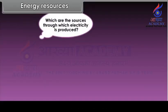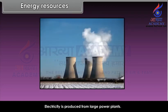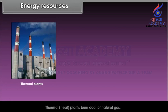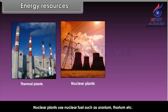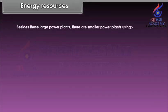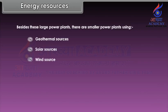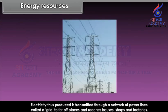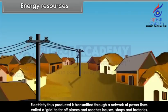Electricity is produced from large power plants. Thermal or heat plants burn coal or natural gas. Nuclear plants use nuclear fuel such as uranium, thorium, etc. Hydroelectric power plants use the force of falling water. Besides these large power plants, there are smaller power plants using geothermal sources, solar sources and wind sources. Electricity is transmitted through a network of power lines called a grid to far-off places and reaches houses, shops and factories.